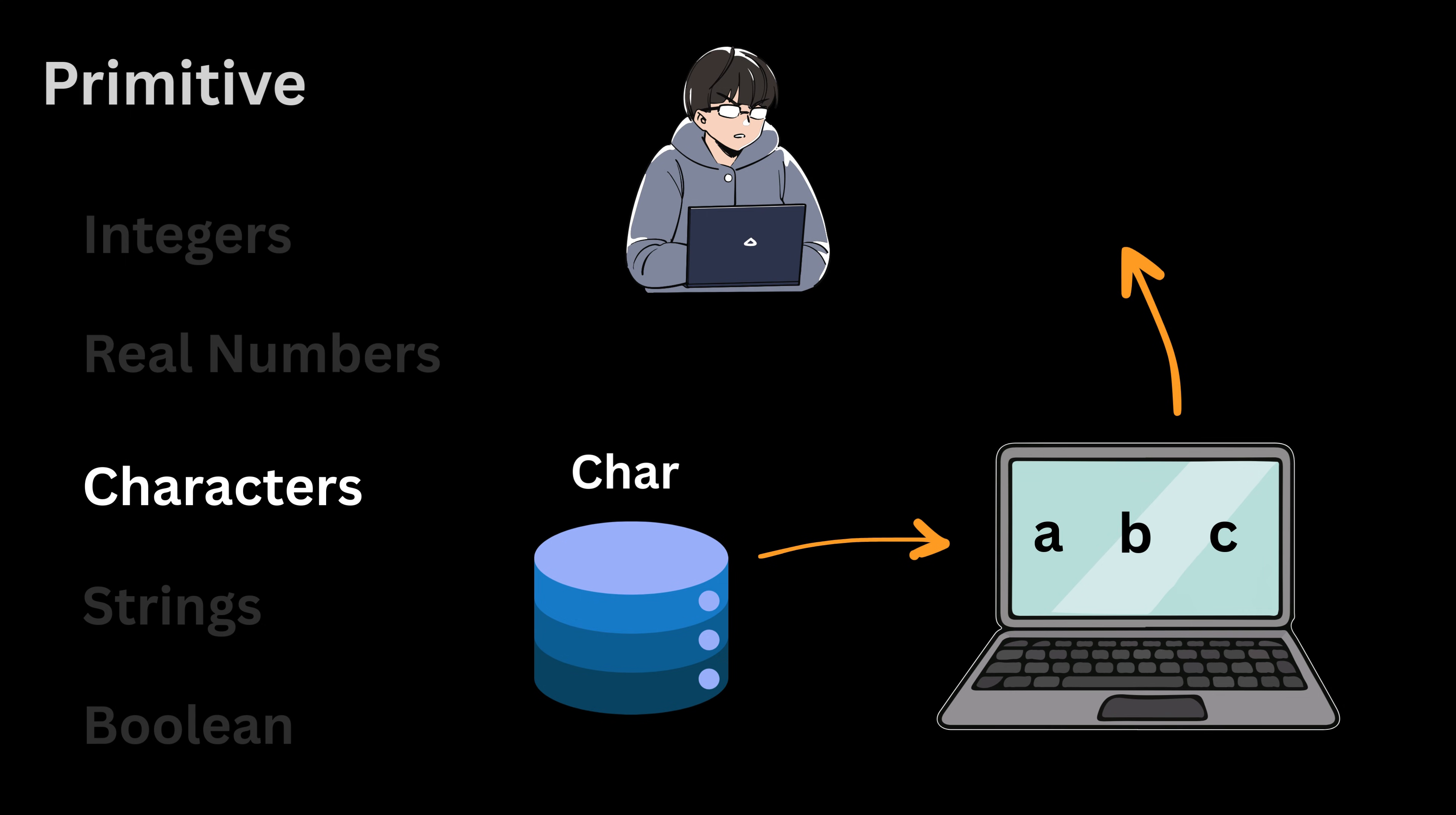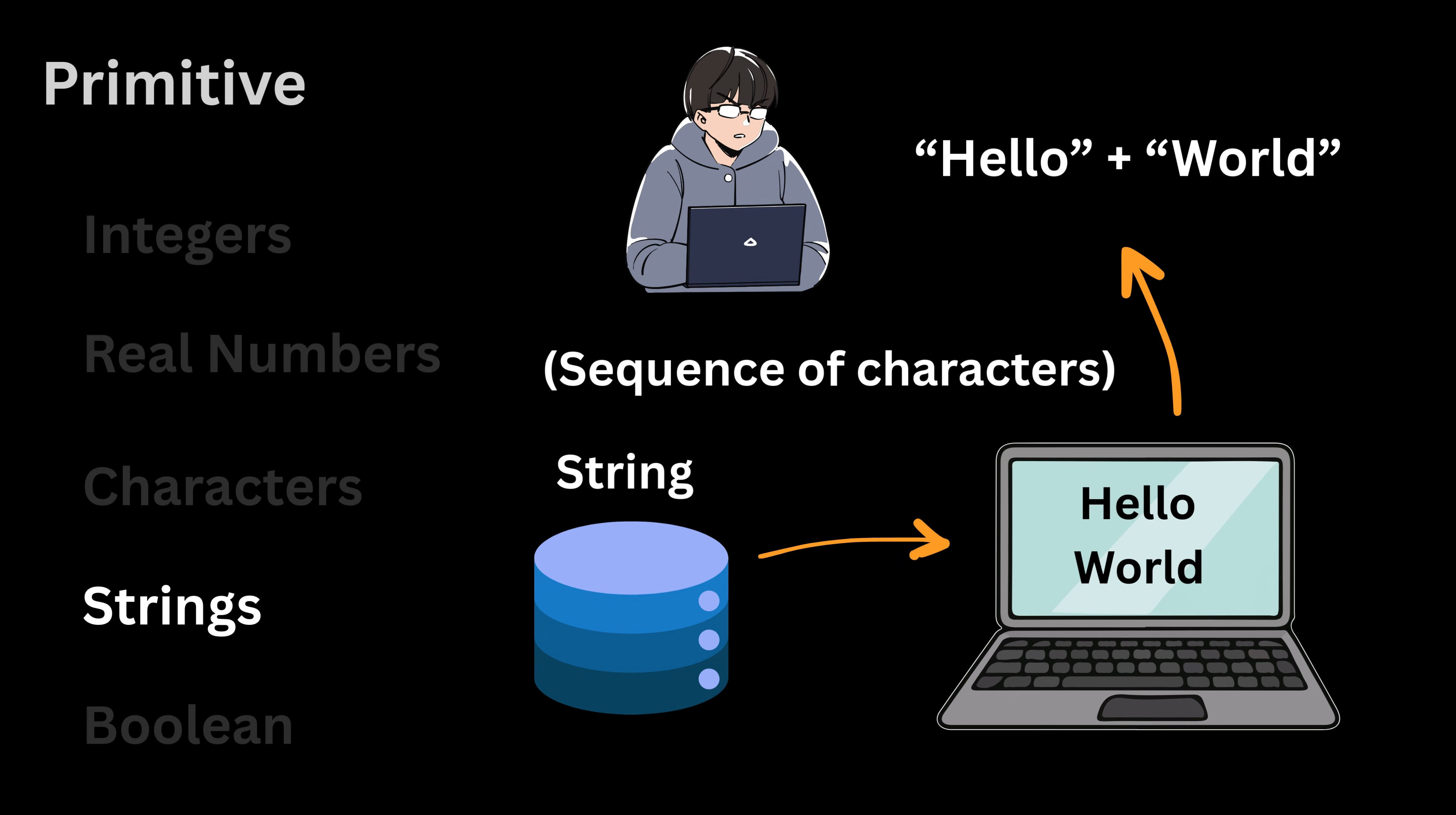If we store a character such as the letter A, the computer will treat it as a single symbol and allow operations like comparing whether one character comes before another in alphabetical order. If we store a string like hello, the computer sees it as a sequence of characters and allows actions like joining hello with world.